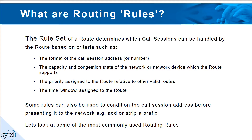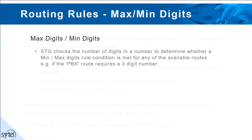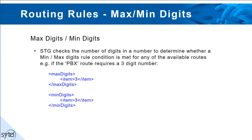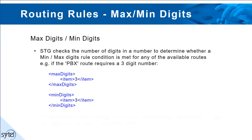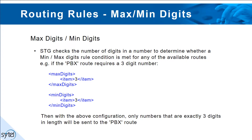Let's look at some of the most common rule settings available. Max digits and minimum digits: STG checks the number of digits in a number to determine whether a minimum or maximum digits rule condition is met for any of the available routes. With the above configuration, only numbers that are exactly three digits in length will be sent to the PBX route.